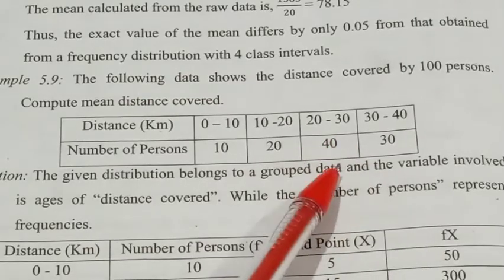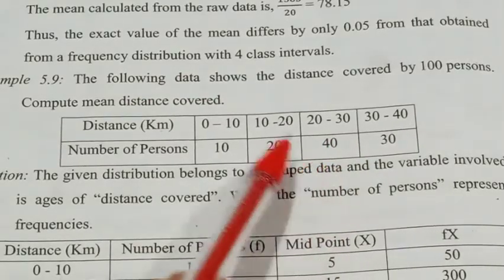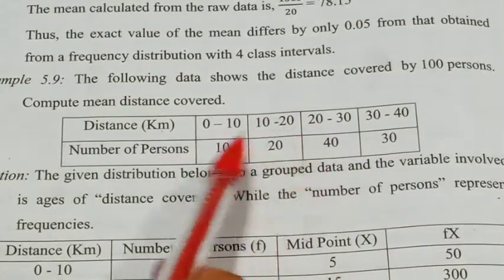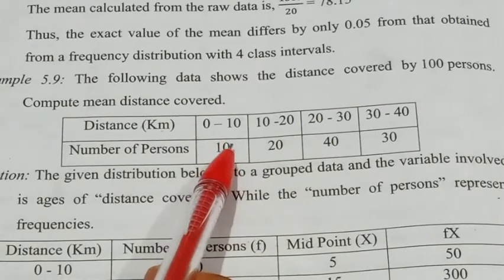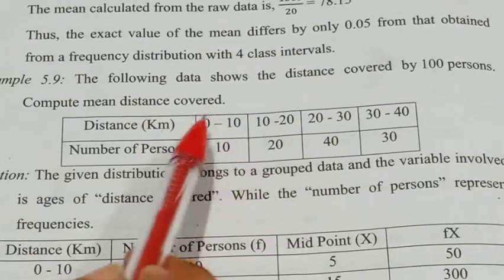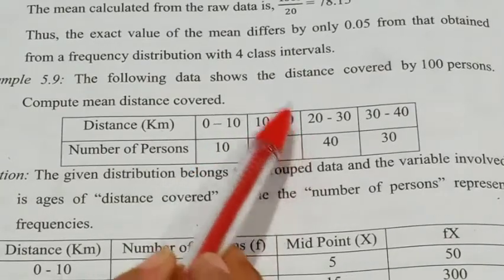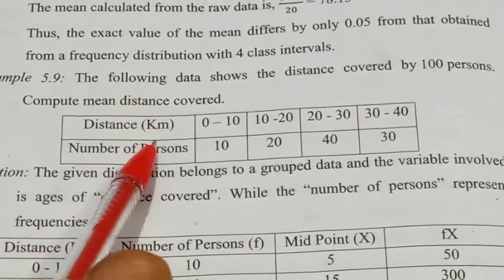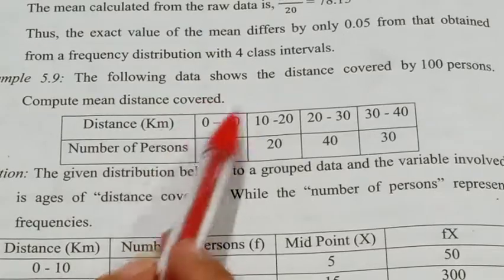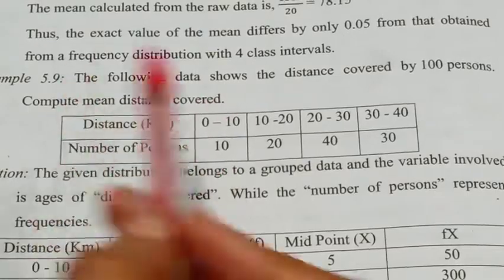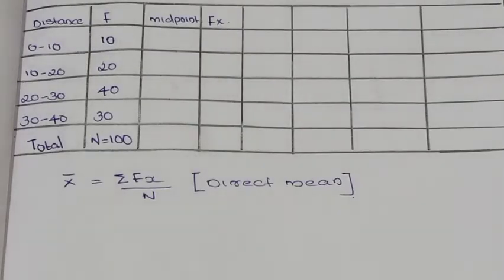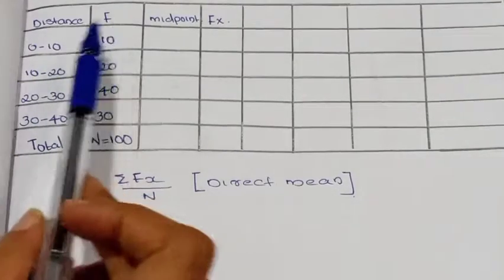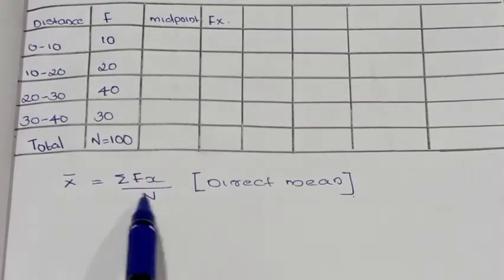In this question, we are learning how to calculate using the Direct Method, Step Deviation Method, and Assumed Mean Method. In these three methods, we are learning how to calculate the mean using the equation: sigma fx divided by n.